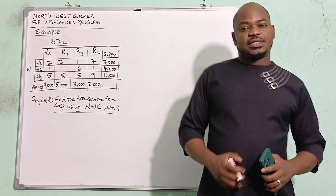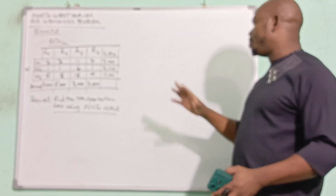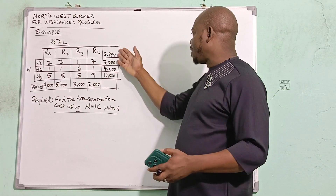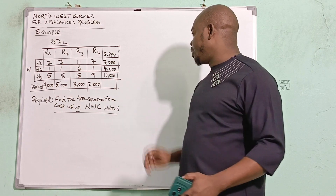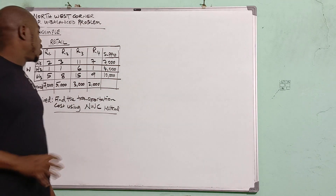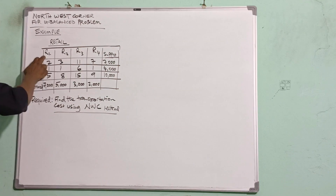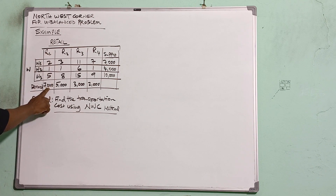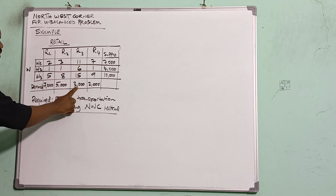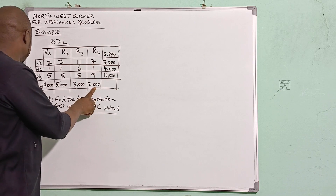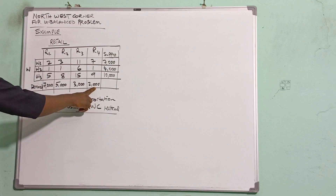What makes a problem unbalanced in transportation models is that the supply and the demand do not actually match. As you can see in this problem, we have retail shops demanding goods: Retail 1 is demanding 7,000, Retail 2 is demanding 5,000.